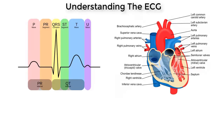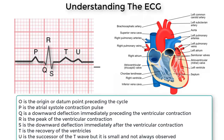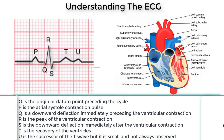Let us understand what an ECG actually means. The heart activity graph is divided into two sections: the PR interval and the QT interval. An ECG is a paper or digital recording of the electrical signal that occurs in the heart — it is also called an electrocardiogram or EKG. ECG is used to determine heart rate, heart rhythm, and other information regarding heart activity or condition.